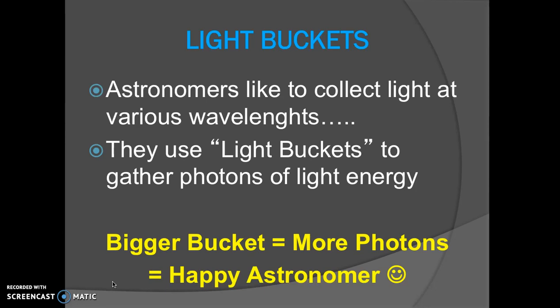One of the ways we collect light is by using what I'm going to call light buckets to gather photons of light energy. So light buckets are telescopes. Imagine if I had a little cup and I was trying to collect rain. Rain is my analogy for light photons. A small cup would be really hard to gather a lot of raindrops, but if I had a huge swimming pool I'd fill up that bucket a lot faster. Astronomers use telescopes as our light buckets trying to gather photons.